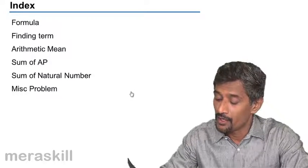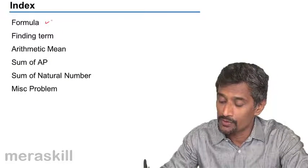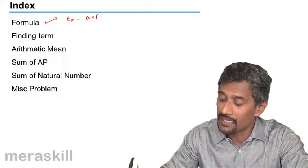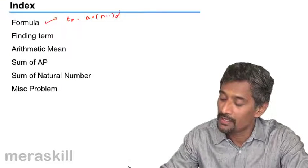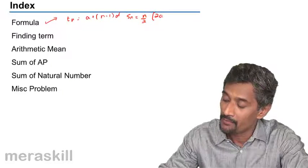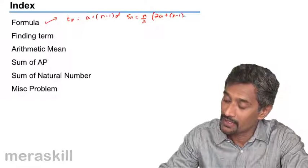So here we have the formulas. The two major formulas: Tn, which is a plus n minus 1 into d, and of course...